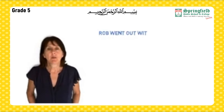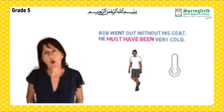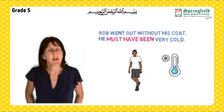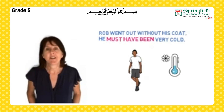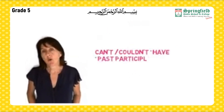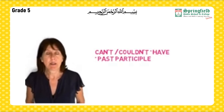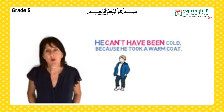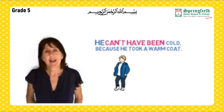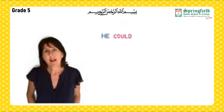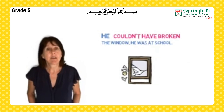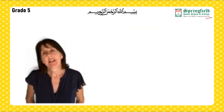For the past tense, use 'must + have + past participle' when sure something is true: 'Rob went out without his coat — he must have been very cold.' When sure something is not true in the past, use 'can't/couldn't + have + past participle': 'He can't have been cold because he took a warm coat.' Or: 'He couldn't have broken the window — he was at school.'